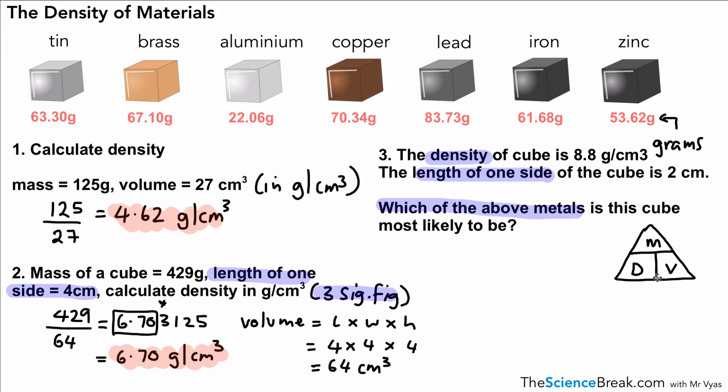Mass is density times volume. So the density is 8.8 grams per centimeters cubed given in the question. We multiply that by the volume, but we only have the length of one side. Remember, we just do that by 2 cubed, or length times width times height, which is 2 times 2 times 2, which is 8.